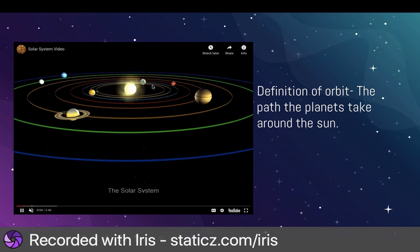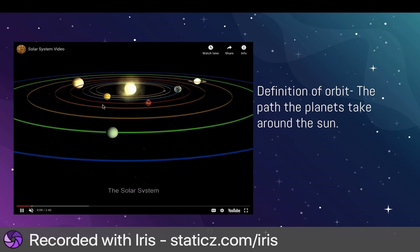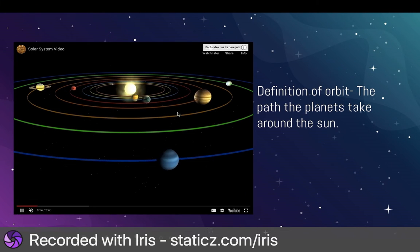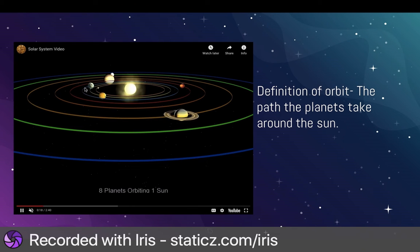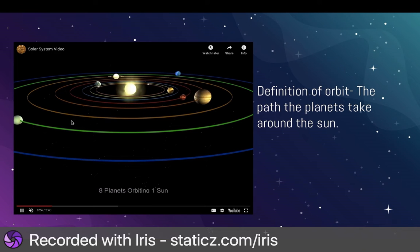All right, here we have the solar system. You can see all the planets moving. These planets here, the inner planets, are going much faster than the outer planets. The outer planets are going kind of slow. We see Earth right there. We see Mercury going very, very fast. They all go at different speeds.